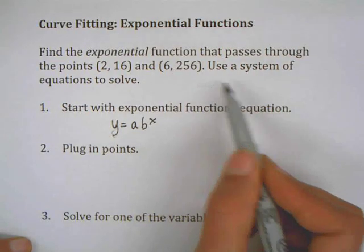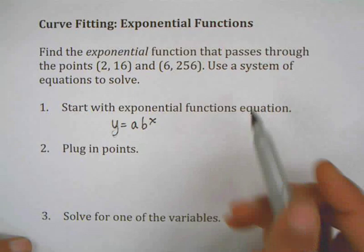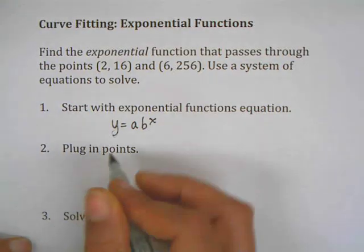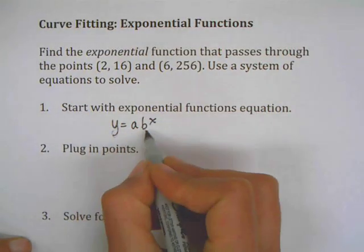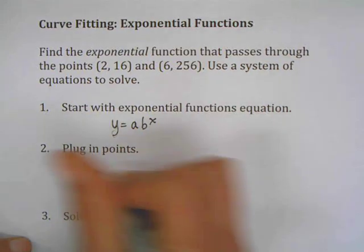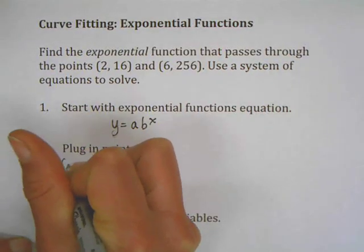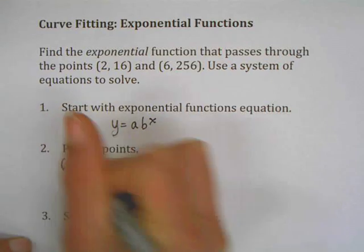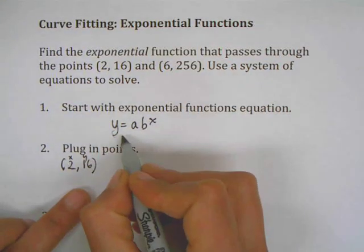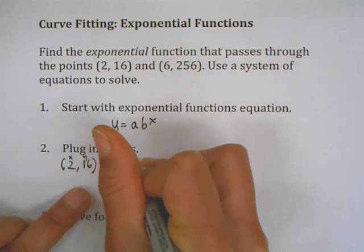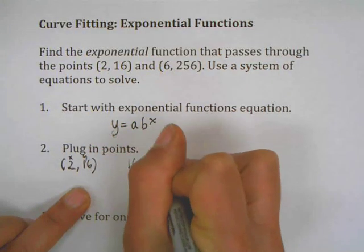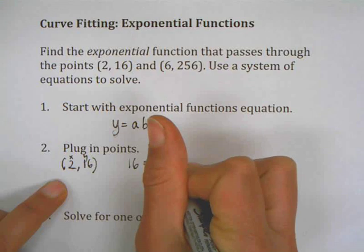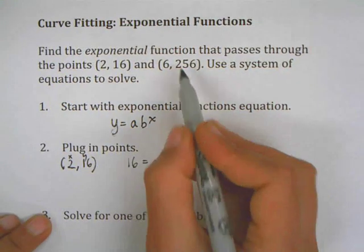One way to do this is by using a system of equations to solve things. I'm going to take my equation y equals ab^x and substitute in the points. I have (2, 16)—here's my x, here's my y—and I'm going to substitute it into this equation, so y is 16, so it's 16 equals a b to the second power.